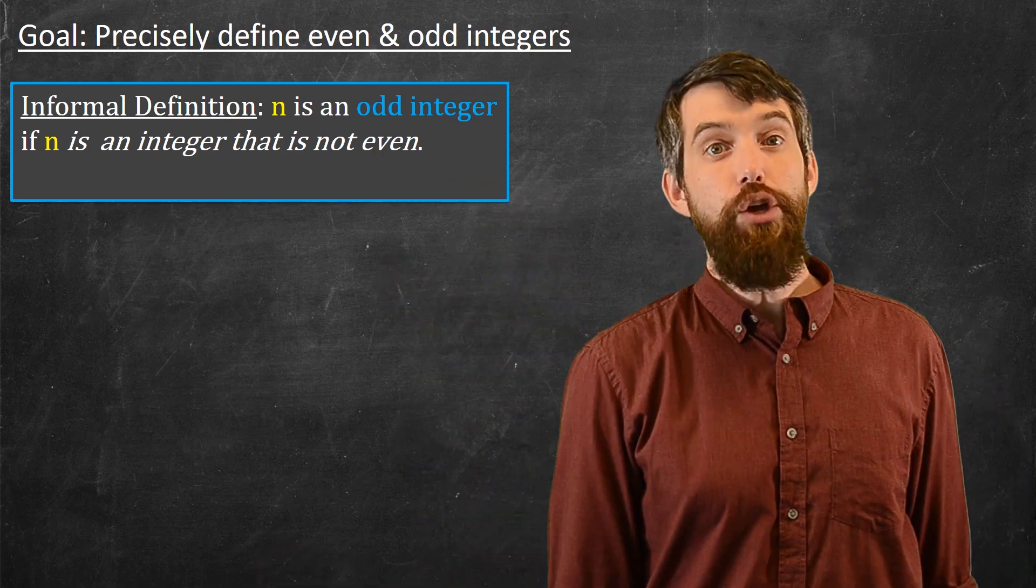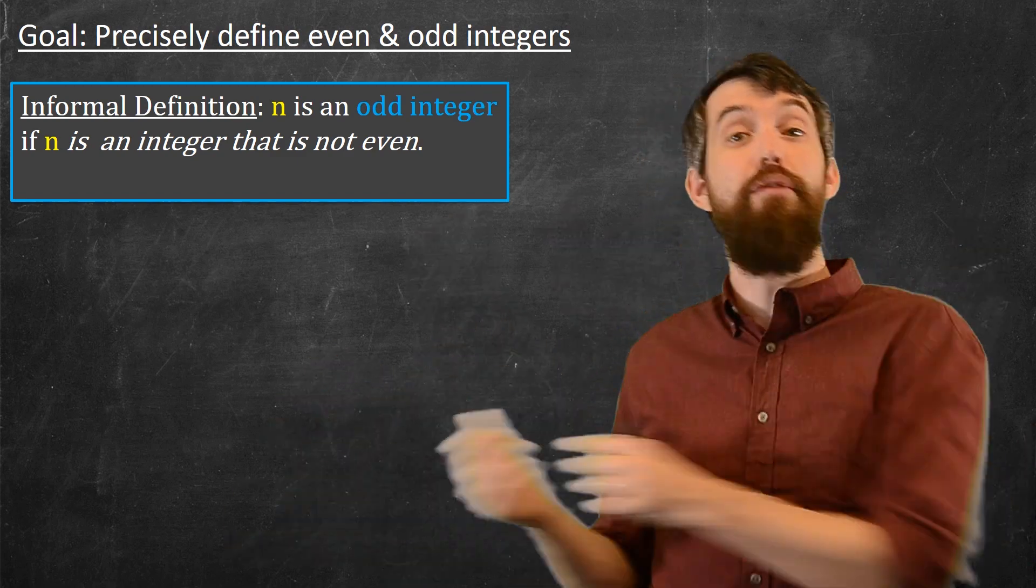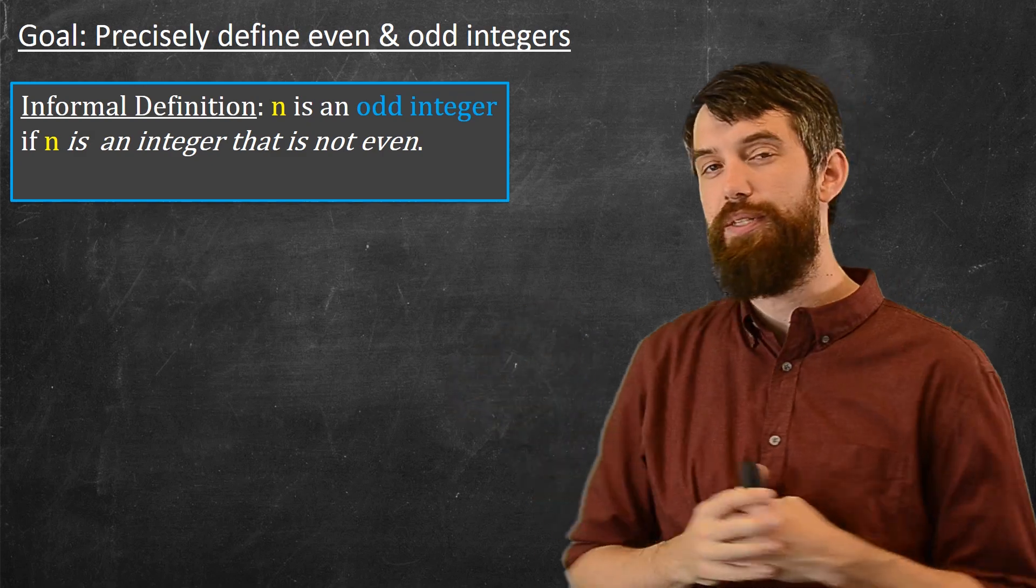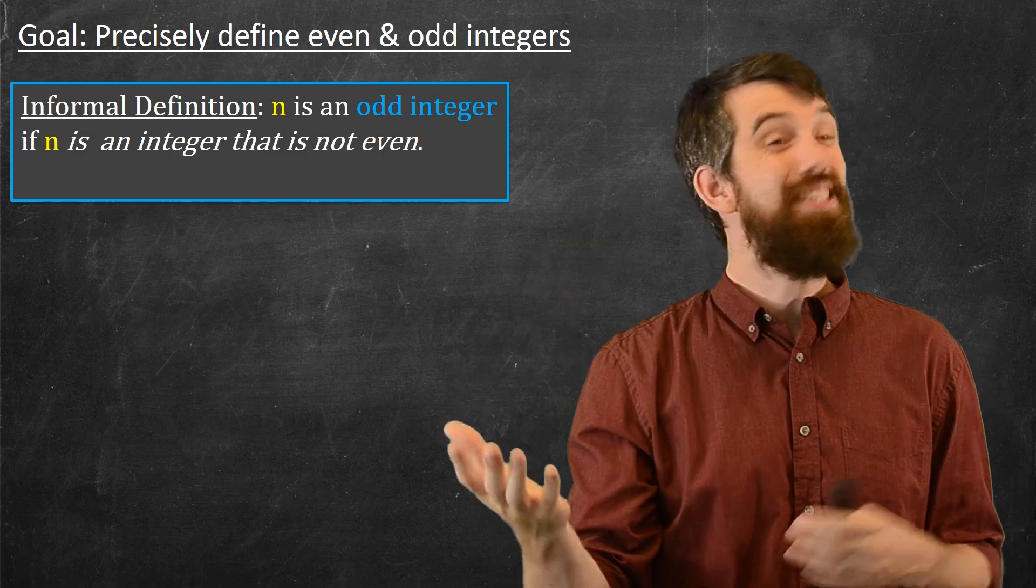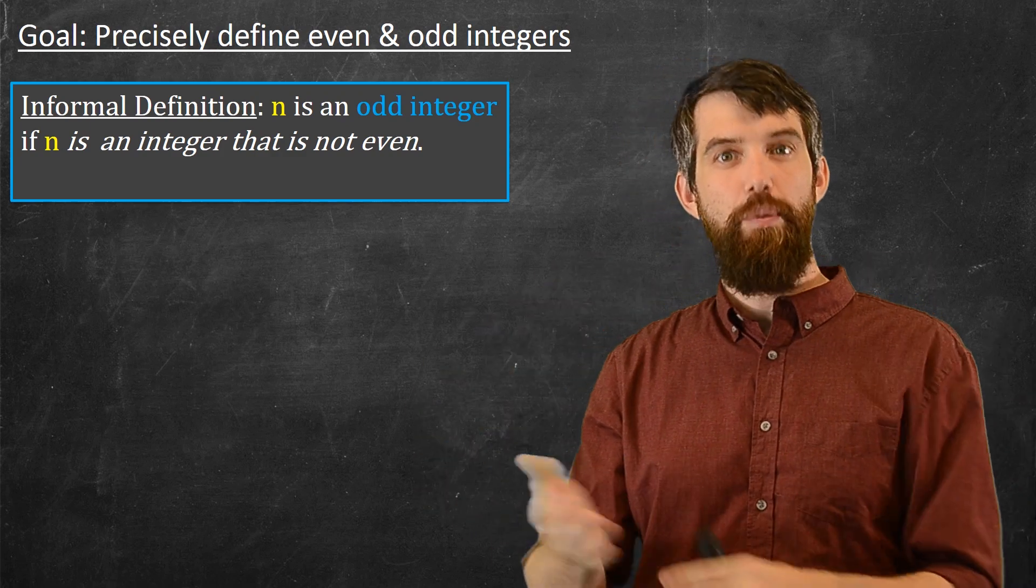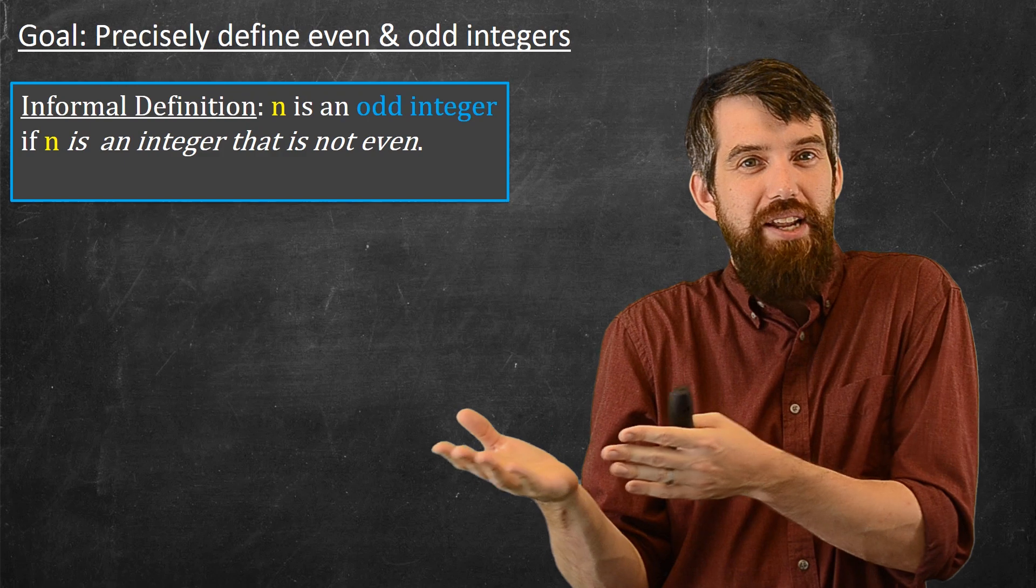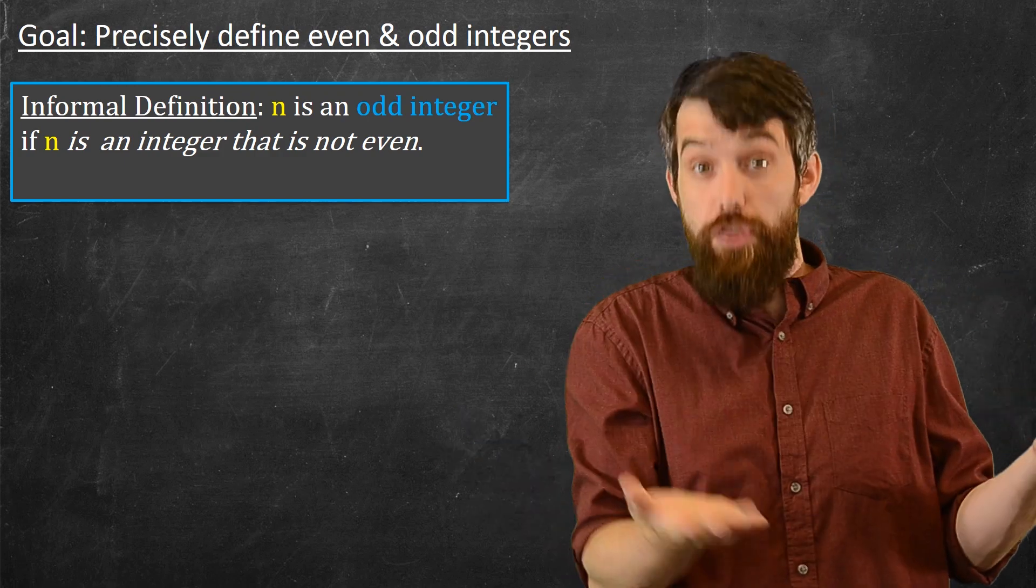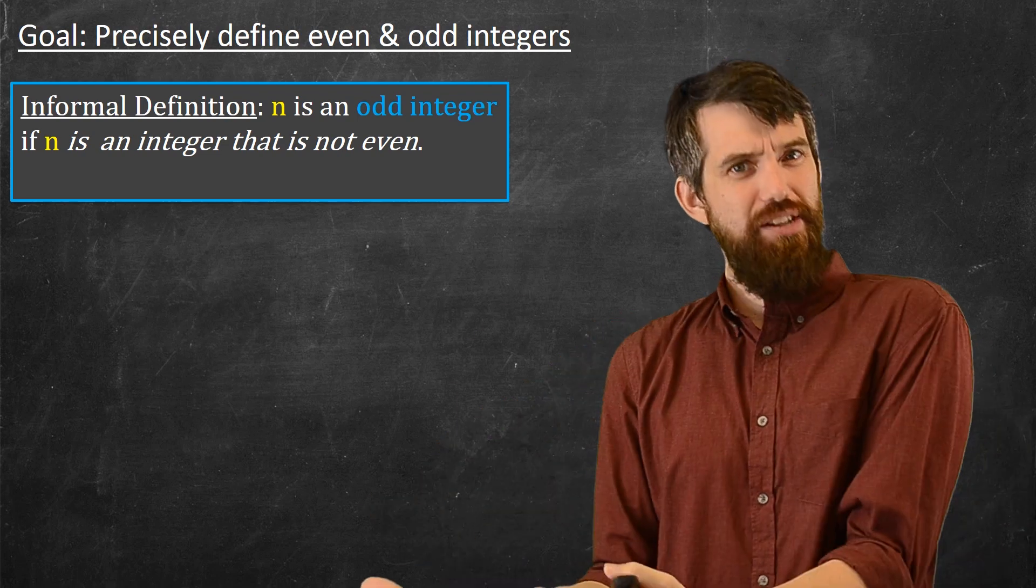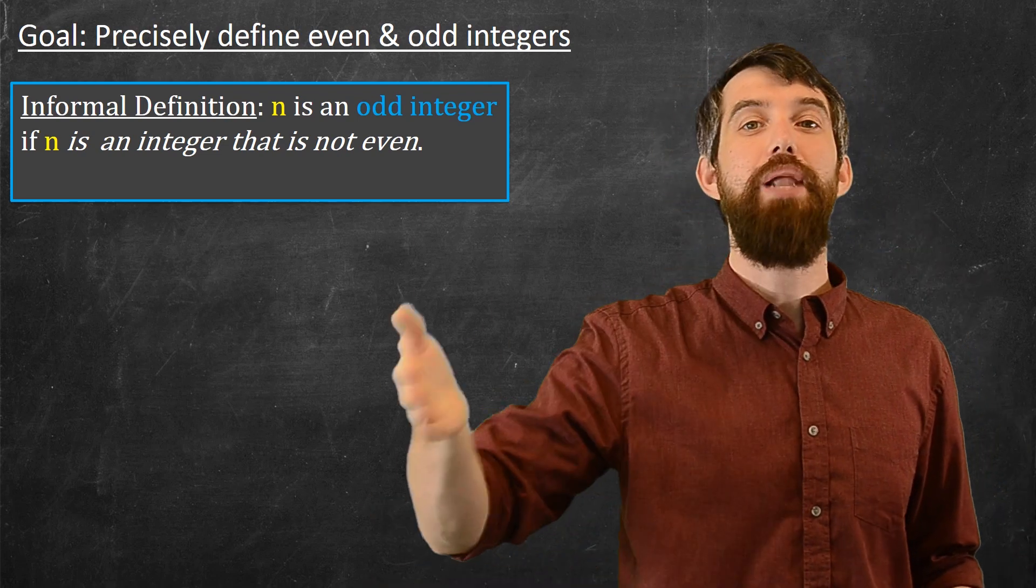That's not bad. You are allowed to define something as being not some other thing. But let's try to be a little bit more precise about this. If I take, say, 6, we said that was even because it was twice an integer. But what about 7? So 7 is odd. But what I notice about 7 is that it's twice an integer, twice 3, plus 1. So all of the odd integers can really be written as twice an integer plus 1.